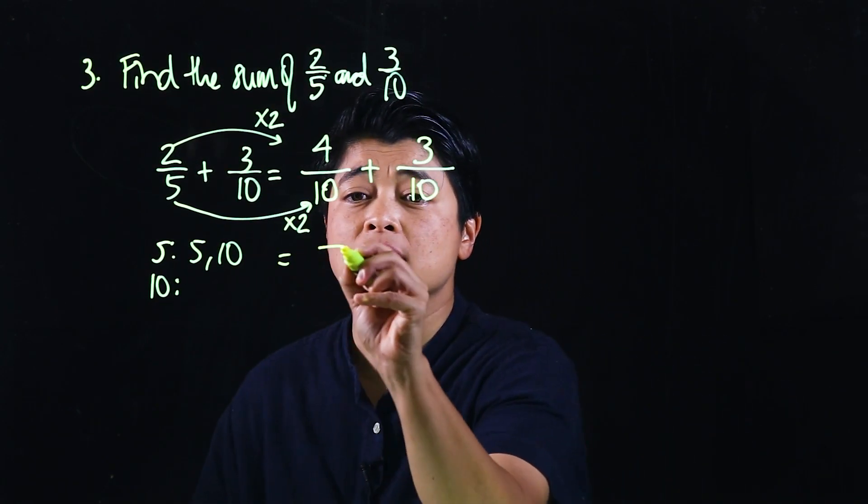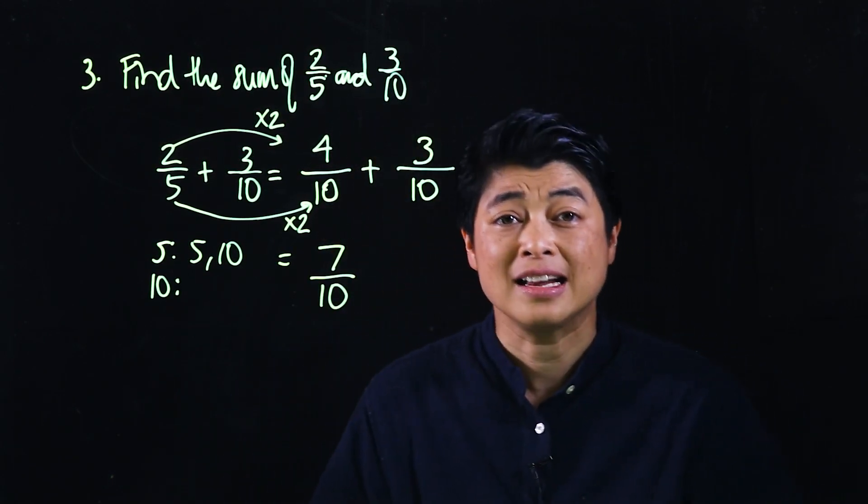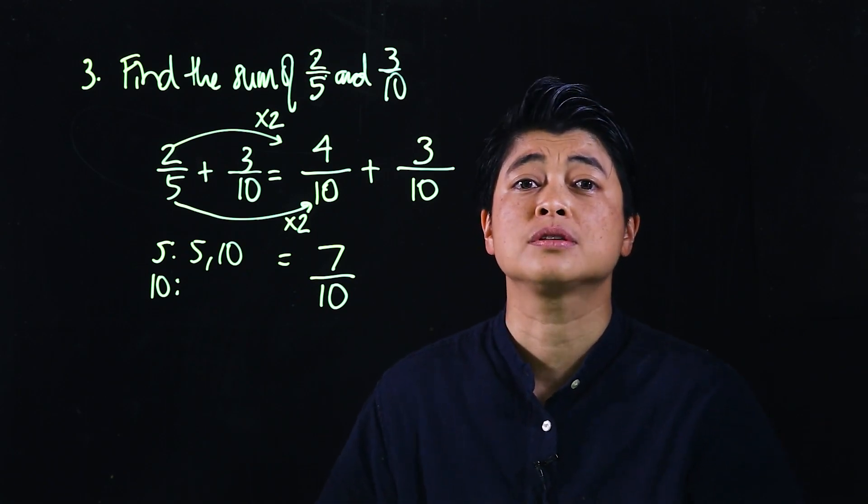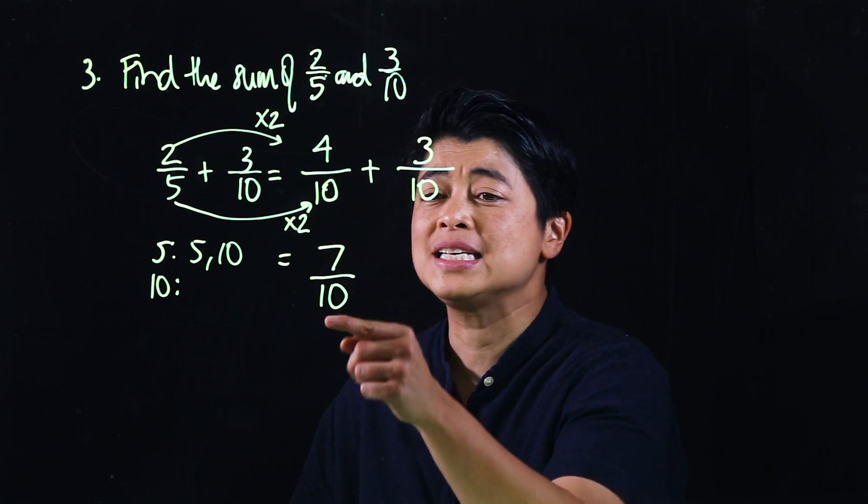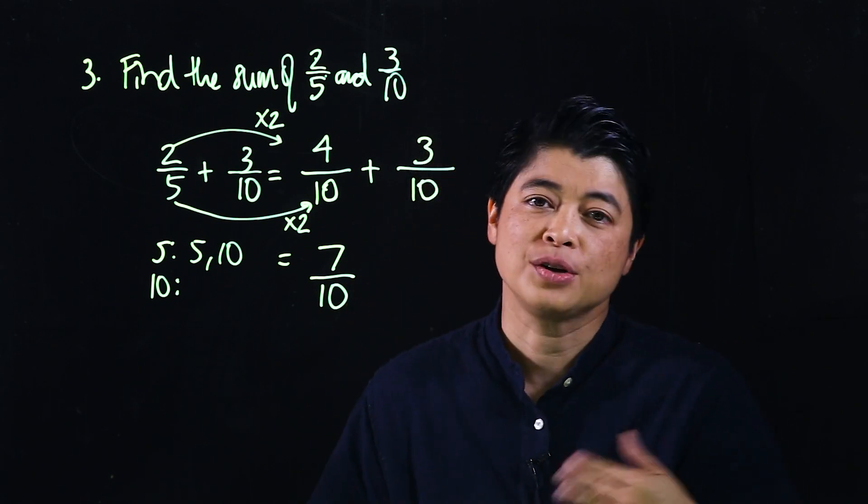If I put those together that will be seven-tenths. All final answers must always be written in simplified or reduced form. In this case we can't simplify because nothing divides both, so we're done for that problem.